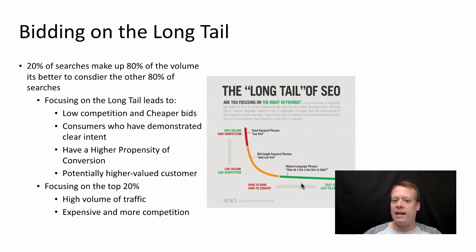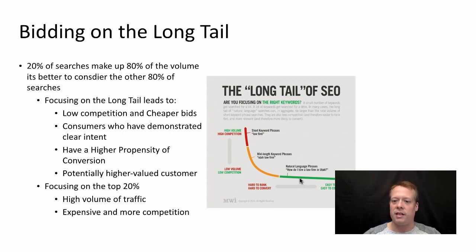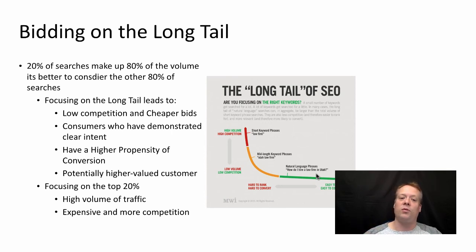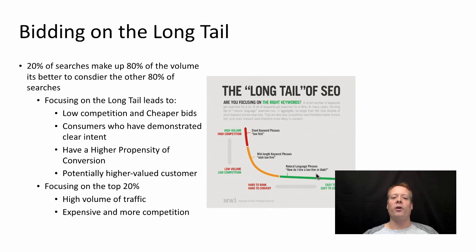Consumers in the long tail have a demonstrated clear intent and a higher propensity to convert. If they're just googling something like 'law firm' in general, they're not going to convert as much as someone searching 'how do I hire a law firm in Utah?' — they are a potentially higher-valued customer looking for exactly what you have to offer and more willing to spend money on it. Focusing on the top 20% has a trade-off: high volume of traffic, but expensive and more competition.